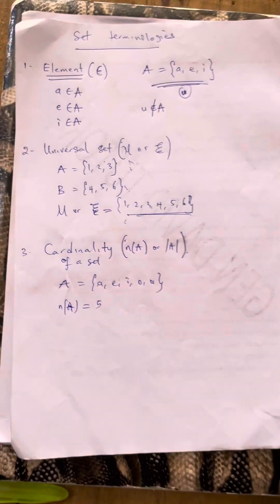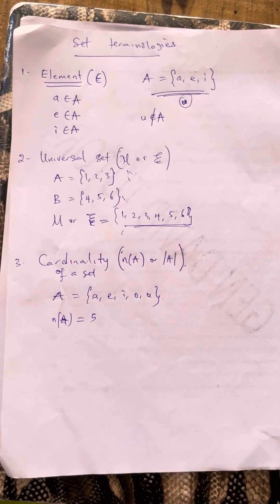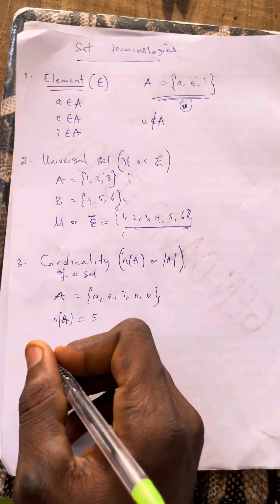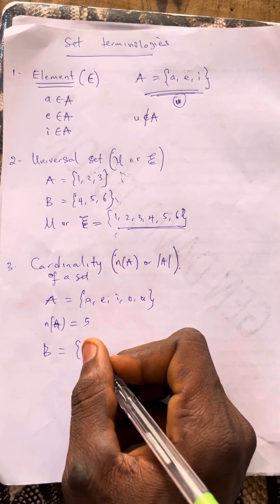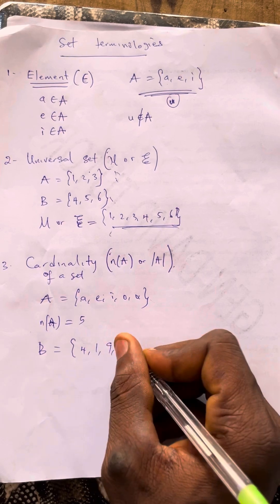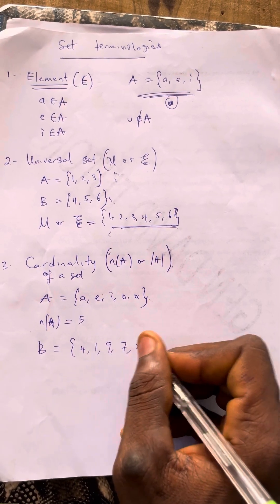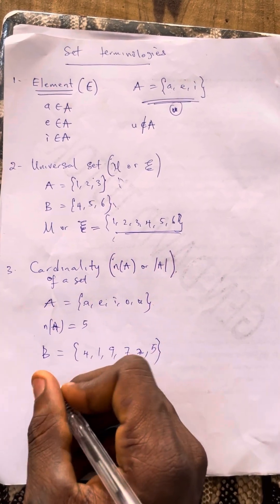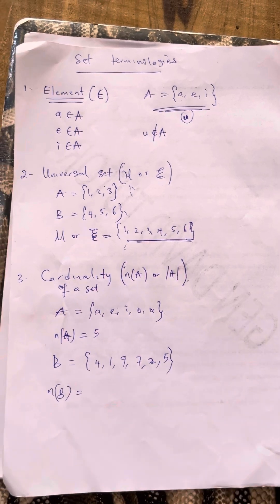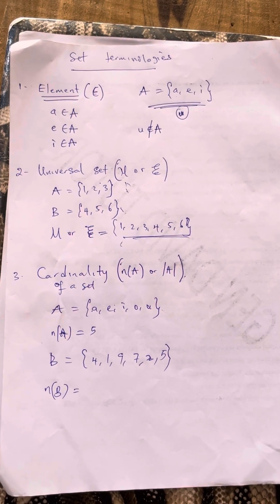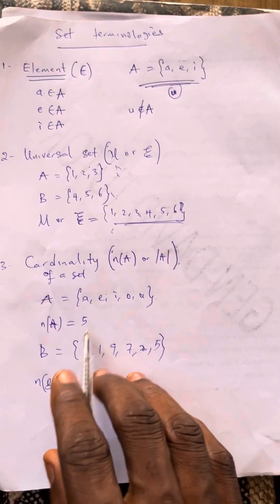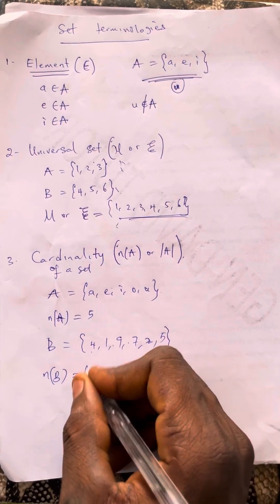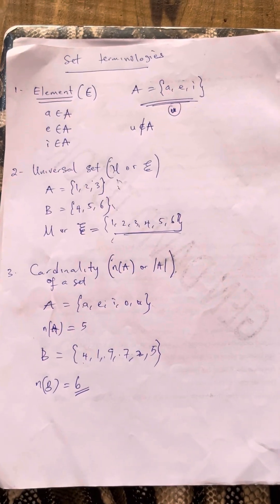We can define the cardinality of a particular set as the total number of elements in that set. For example, if set B is {4, 1, 9, 7, 2, 5}, then N(B) — the number of elements in this set — is 1, 2, 3, 4, 5, 6, which equals 6.